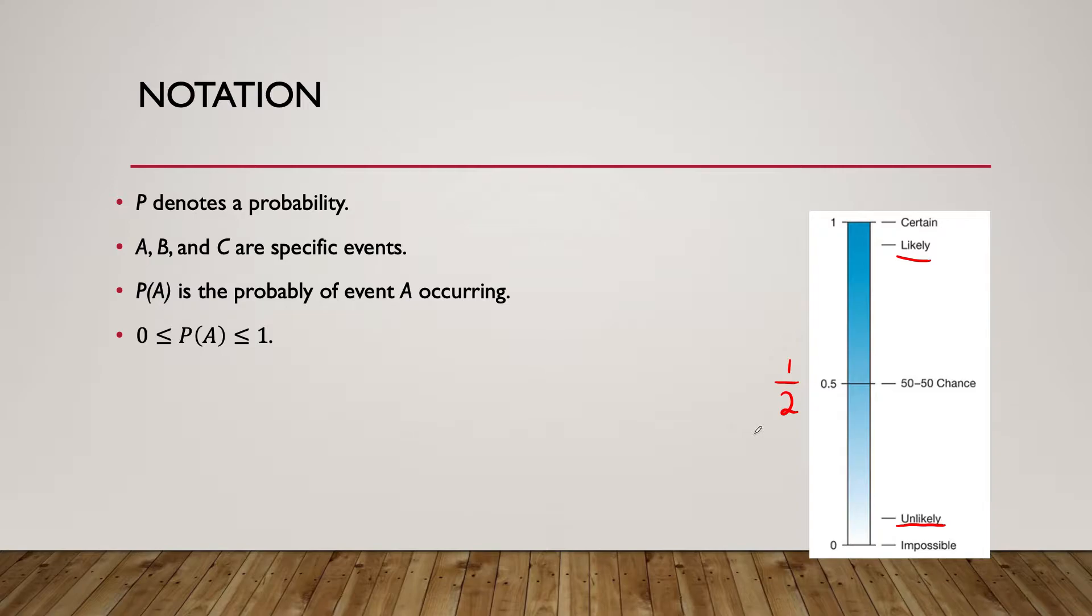For notation with probabilities, capital P denotes a probability, such as probability of X. A, B, and C are specific events. Probability of A must be between 0 and 1 inclusive. A probability of 0.5 is a 50-50 chance. The closer we get to 1, the more likely the event occurs. A probability of exactly 1 means the event is certain to happen. The closer we get to 0, the more unlikely the event occurs. A probability of 0 is called an impossible event.